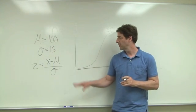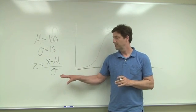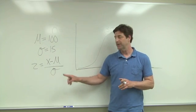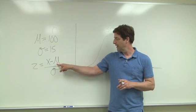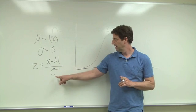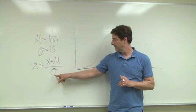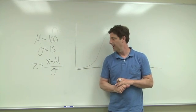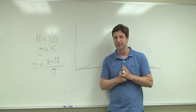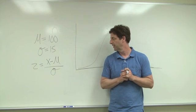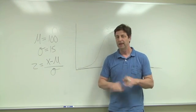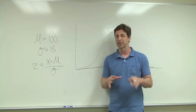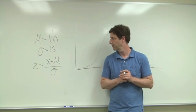Now to calculate a z-score, you can do this with sample data or with population data. So if you were using sample data, that would be an x-bar instead of a mu, and instead of the standard deviation for the population, you'd have the estimate of the standard deviation for the sample. Either way, the z-score will come out to be the same — it's just a question of what you can then do with the z-score.